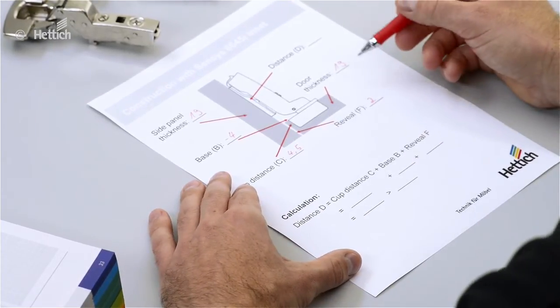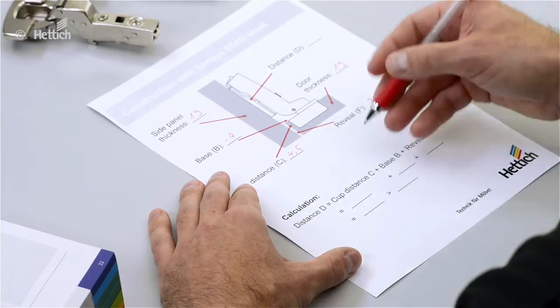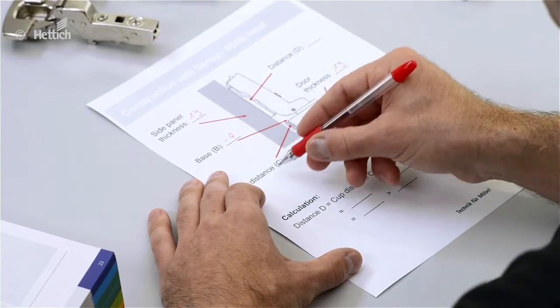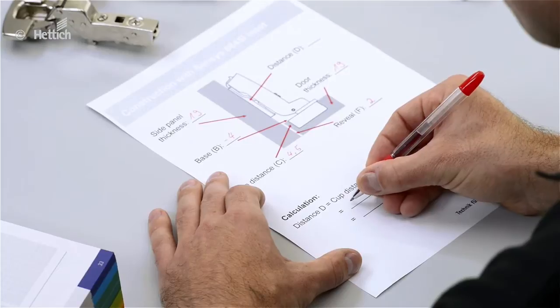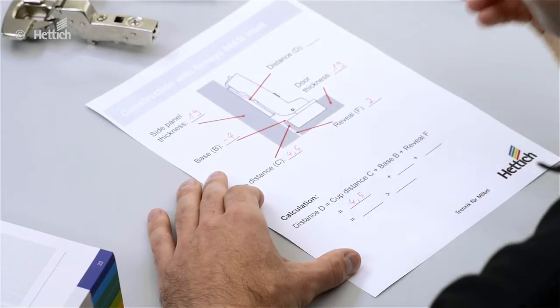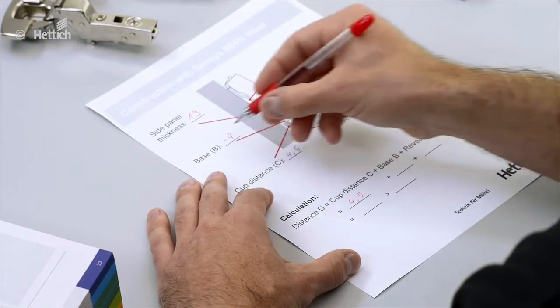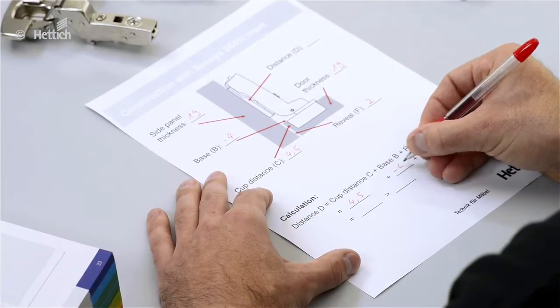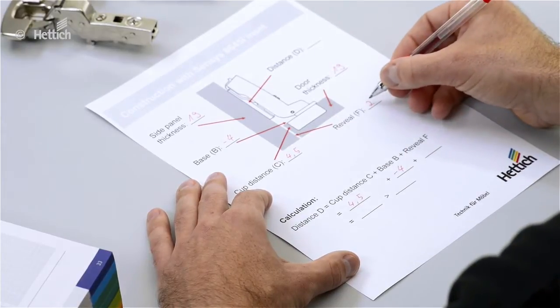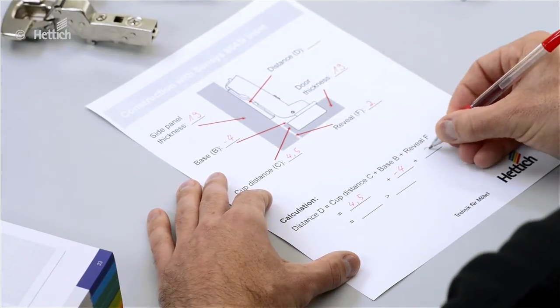Then we can fill the values into the formula: cup distance C, 4.5 millimeters, plus base B, minus 4, and the reveal, 2 millimeters.